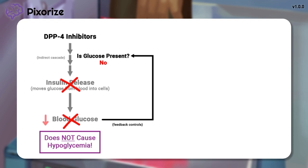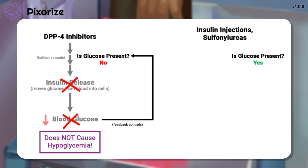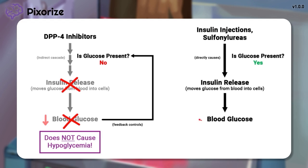Contrast this against directly injected insulin or other insulin-releasing drugs like the sulfonylureas, which work by causing the pancreas to directly dump all of its insulin into the bloodstream. Both of those mechanisms have no feedback controls to prevent things from spiraling out of control. Even when there's not enough glucose present, these drugs continue releasing insulin, causing blood glucose levels to fall dangerously low — resulting in hypoglycemia.